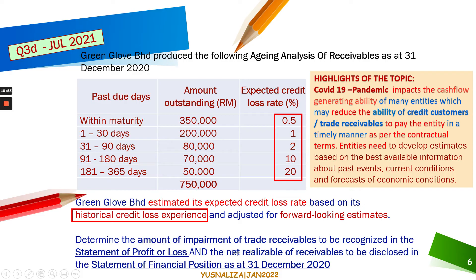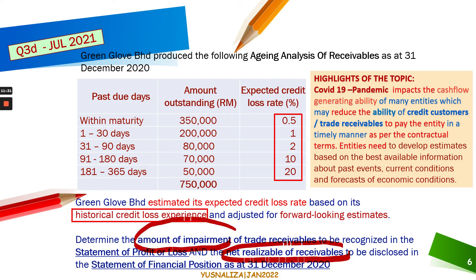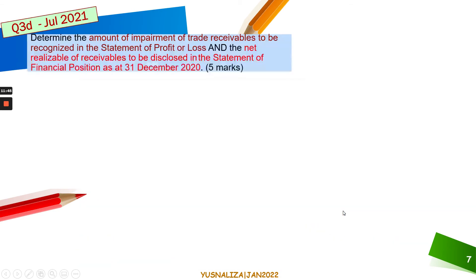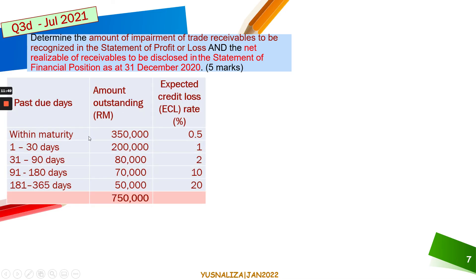You are asked to determine the amount of impairment of trade receivable to be recognized in the statement of profit or loss, and whether there is a decrease or increase in impairment — charged as an expense or recognized as other income. You also need to determine the net realizable value (NRV) of the receivable. The total accounts receivable was $750,000. We will extract the aging analysis table and apply the expected credit loss rates to calculate the ECL allowance.